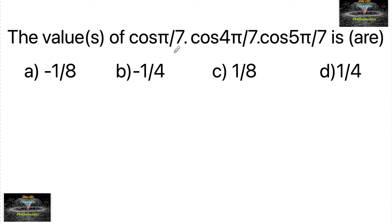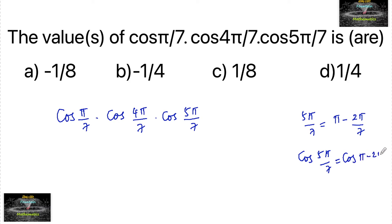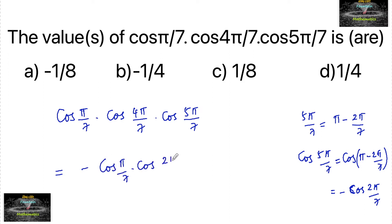We need to find the values of cos(π/7) · cos(4π/7) · cos(5π/7). Since 5π/7 can be written as π minus 2π/7, cos(5π/7) equals cos(π − 2π/7), which equals minus cos(2π/7). So the product becomes minus cos(π/7) · cos(2π/7) · cos(4π/7).